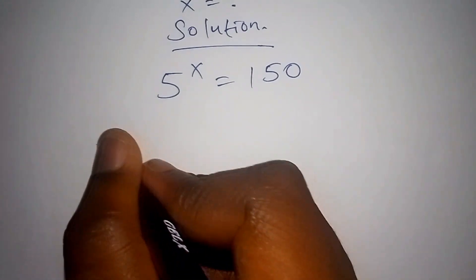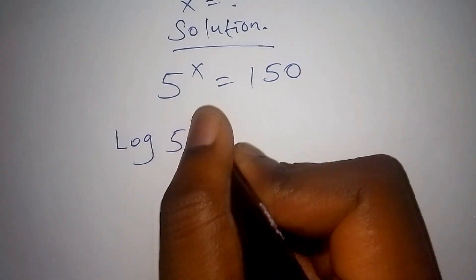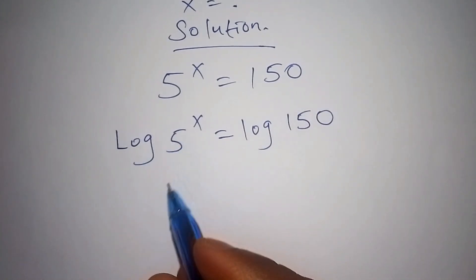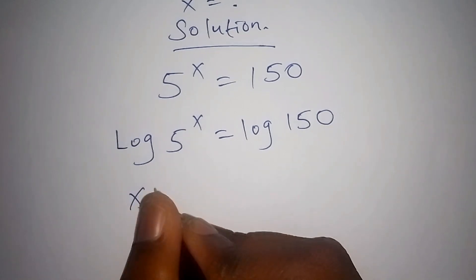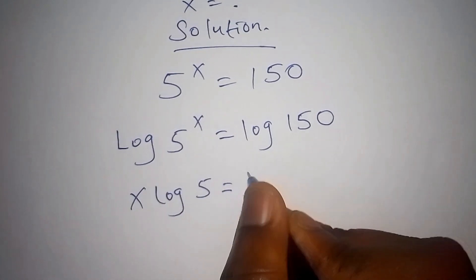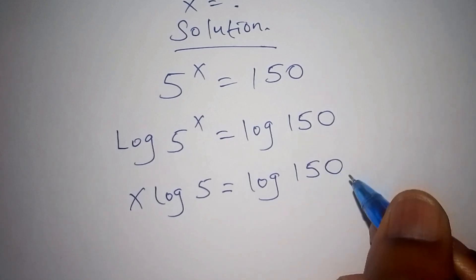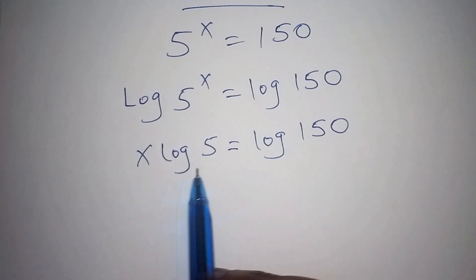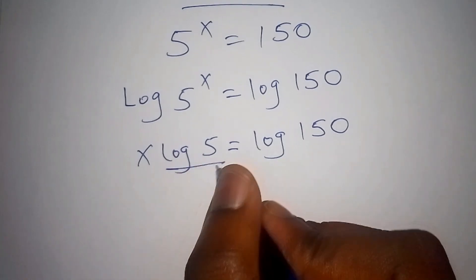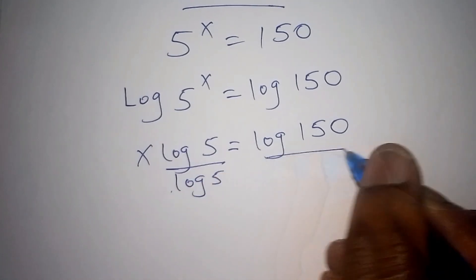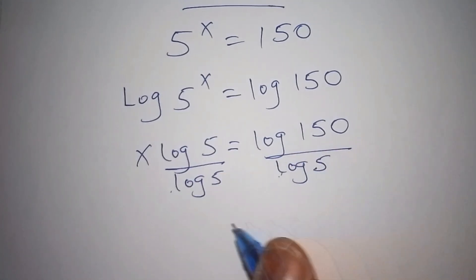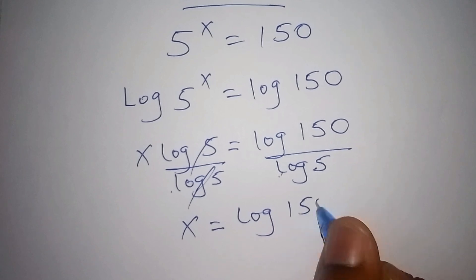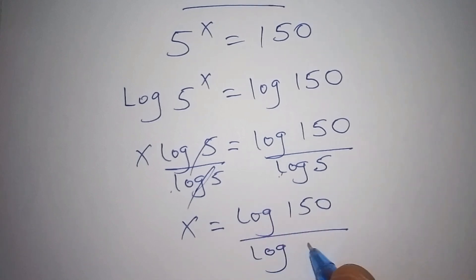So we shall have the log of 5 to the power of x is equals to the log of 150. The log of 5 to the power of x can also be written as x·log 5 is equals to log of 150. From here we isolate x by dividing both sides by log of 5, so the log of 5 and log of 5shall cancel. Now x is equals to the log of 150 all over the log of 5.